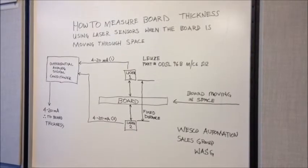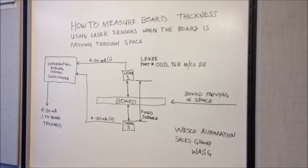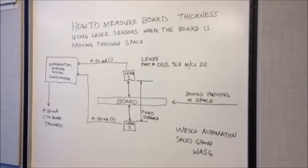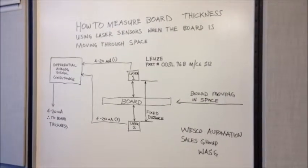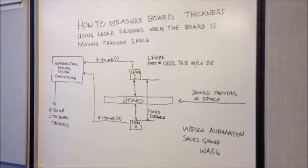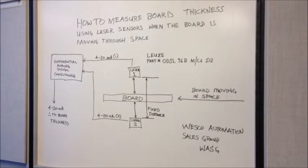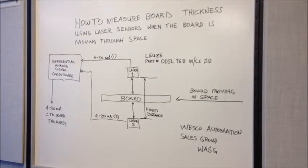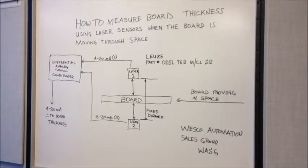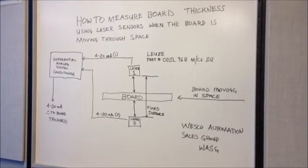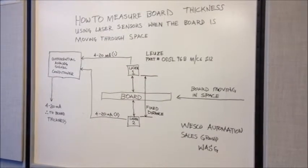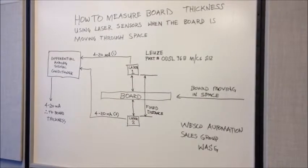Today's application, we're going to discuss how to measure the thickness of a board as it's moving through space. Quite often in a factory, the board may not be fixed down onto a particular roller. It might be moving or cocked up one way or the other, so we can't always use just a single sensor to measure the distance from the sensor to the board.